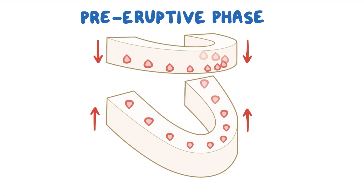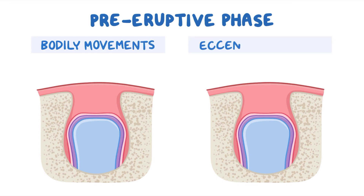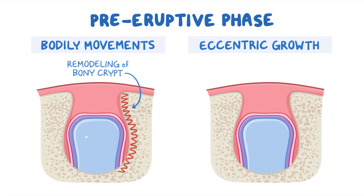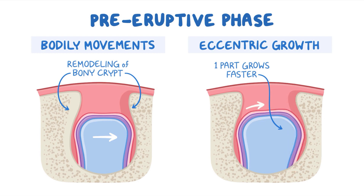In this phase, movement of the tooth germ is achieved by two methods: bodily movements and eccentric growth. In bodily movement, there is a remodeling of the bony crypts through resorption of the bony crypt wall in the direction that the tooth is moving, followed by depositing new bone on the opposite crypt wall, hence creating a path for the tooth germ. Eccentric growth is where a part of the tooth grows relatively faster than the rest, helping the crown reorient itself as the jawbone keeps growing.